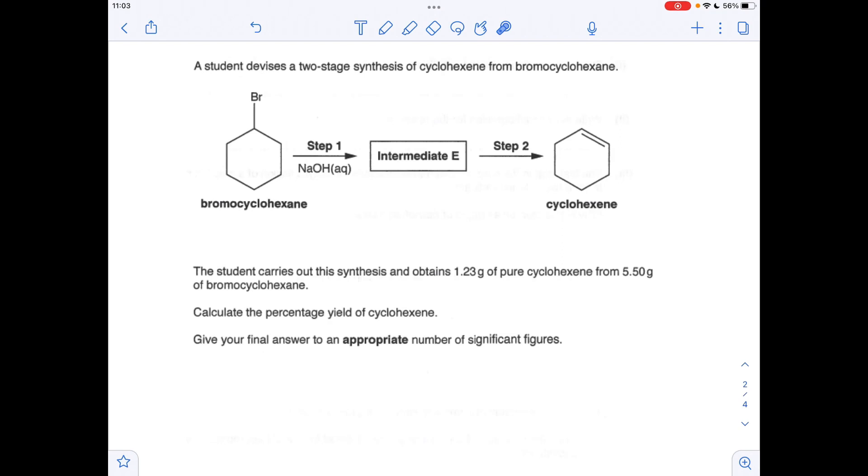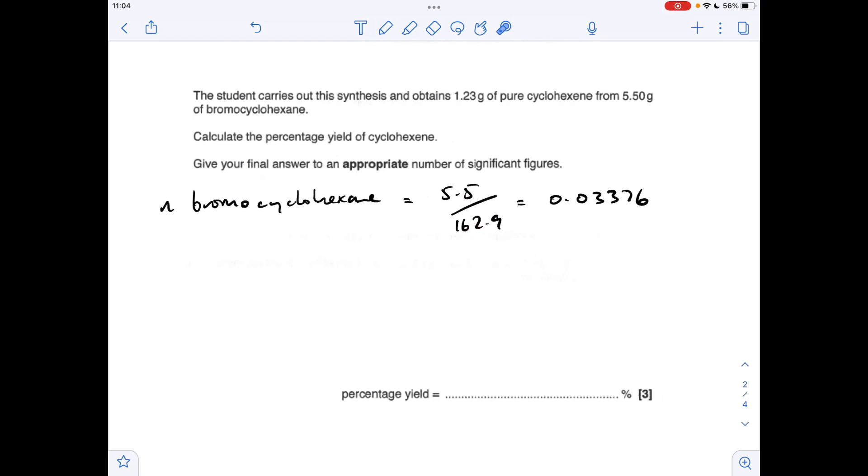Moving on to the next question now, so this is a percentage yield question, and we've got to give our answer to an appropriate number of significant figures. Well, straight away, you can see everything's to three significant figures, so I'm going to give my final answer to three as well. Now, for percentage yield questions, you can either work in moles or in mass. I always work in moles, so the first thing I want to do is work out the moles of the bromocyclohexane that we're starting with. So mass over MR, 0.03376 moles.